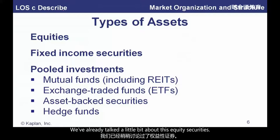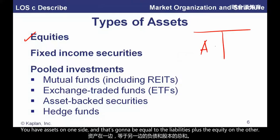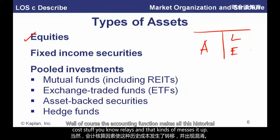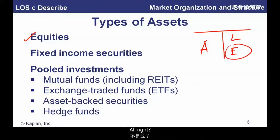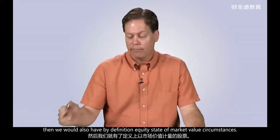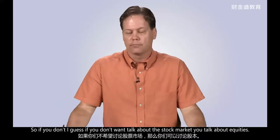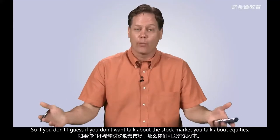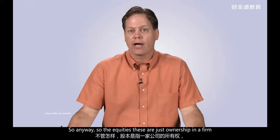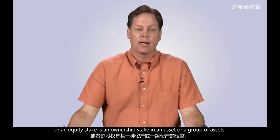Types of assets. Equities are ownership in a company. Looking at the balance sheet, assets equal liabilities plus equity — the equity holders own the company. This is what we call stocks or the stock market. Fixed income securities — more commonly called bonds — involve a contract to make payments according to a guideline and return principal at maturity. Pooled instruments take lots of assets and put them in a bucket, then sell an undivided interest against those. A mutual fund is a prime example: it aggregates money from small investors, and a manager makes decisions about what to buy.